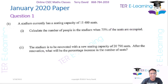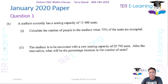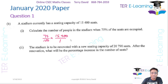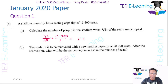The next part: a stadium currently has seating capacity for 15,400 seats. Calculate the number of people in the stadium when 75% of the seats are occupied. All we need to do is find 75% of 15,400, which is 75 over 100 multiplied by 15,400. That gives me 11,550 people in the stadium.